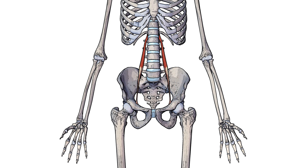A last thing to note about the psoas minor muscle is this lighter coloured area here. That lighter coloured area represents the muscle tendon. With the psoas minor muscle, it's been estimated that this distal tendon accounts for around 57% of the total muscle's length.